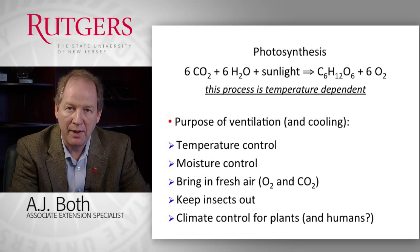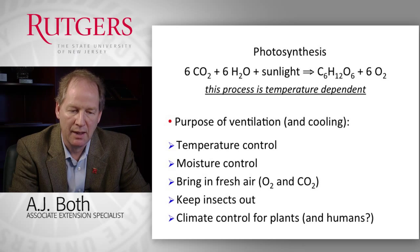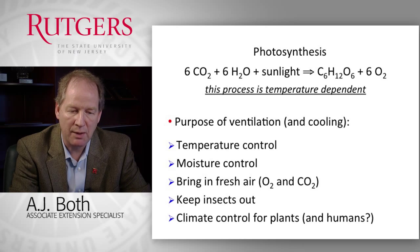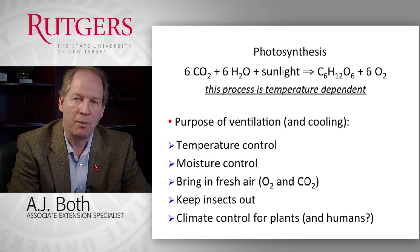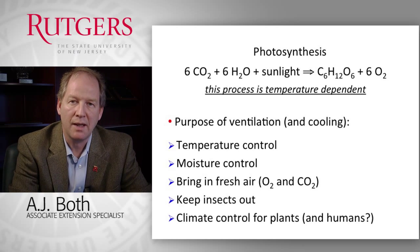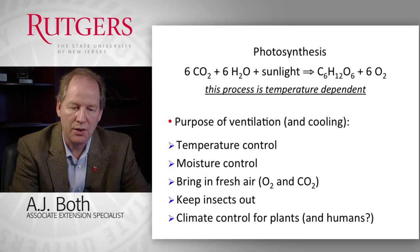We want to keep insects out. As we are moving air through the greenhouse for the ventilation system to control the temperature, we could potentially bring in insects and we want to try to prevent that. And overall, we want to control the climate for the plants — not only the temperature, but humidity and perhaps gases, CO2 and others.